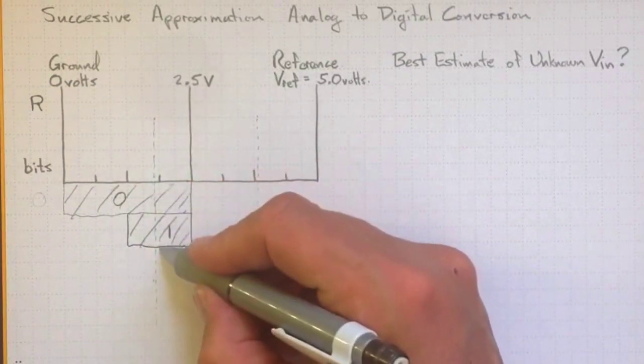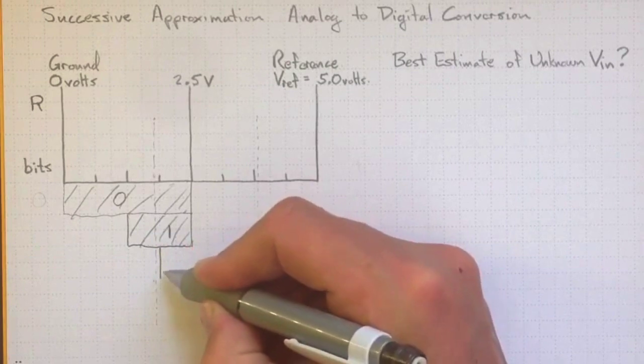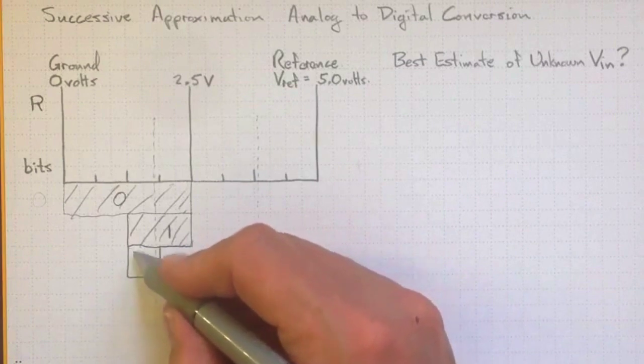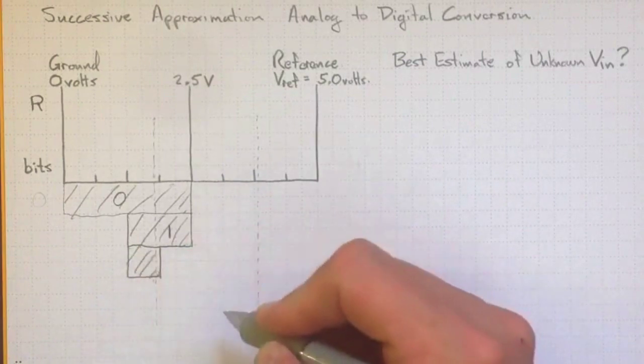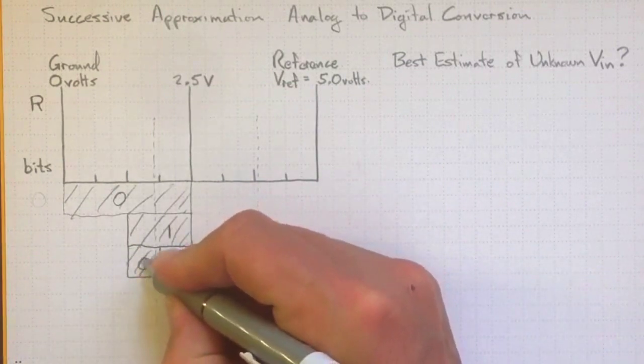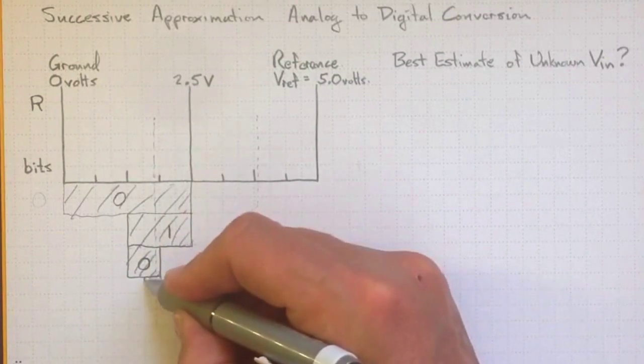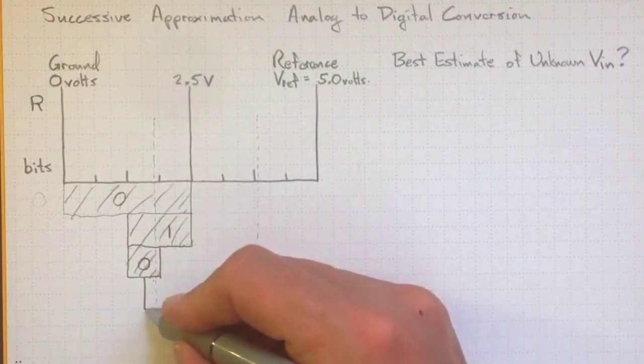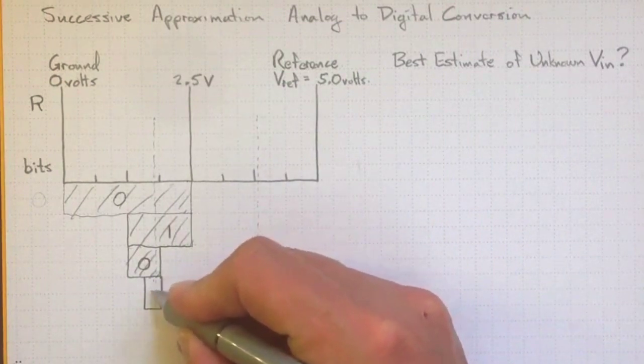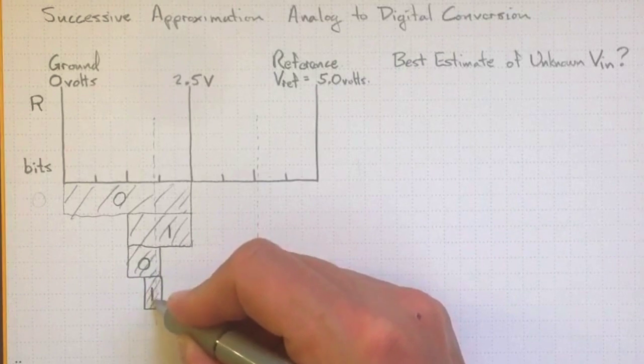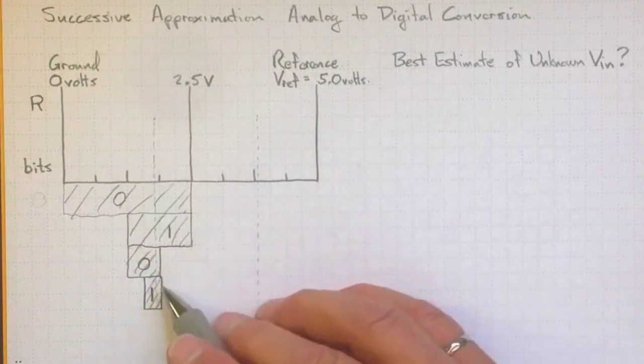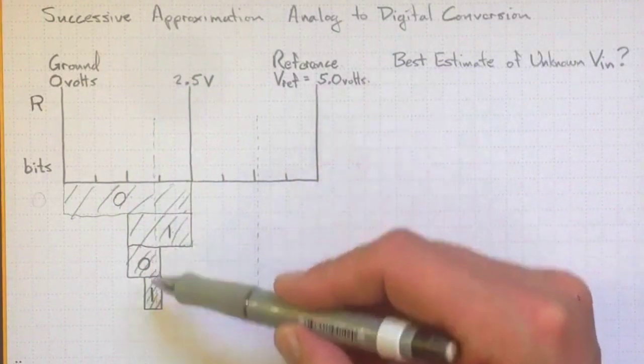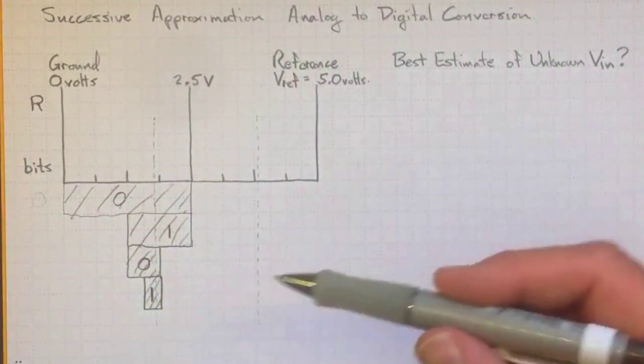And now we'll test against the halfway point again, and we wind up below the halfway point. So we know we're in that region there, another zero. And finally, we'll test against this halfway point, and it's above. So we know we're in this region in here. And that was a one. So for this voltage, we got 0, 1, 0, 1, and we could carry this on for as many bits as we wanted.